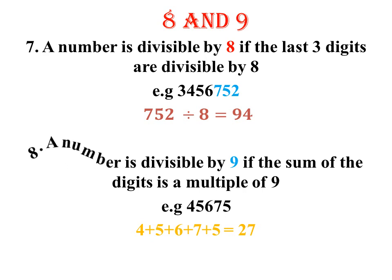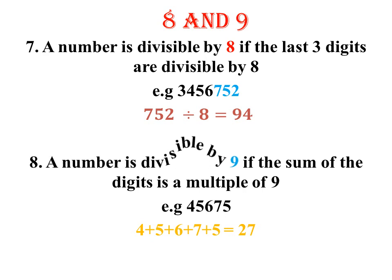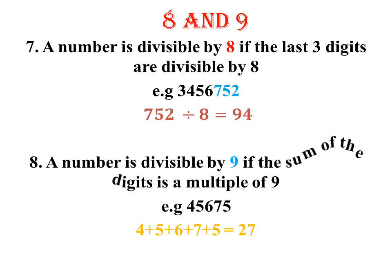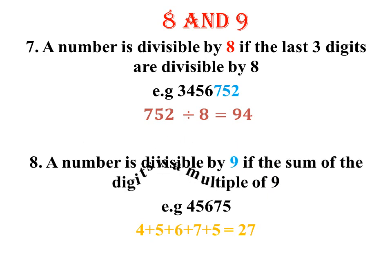The next one is 9. A number is divisible by 9 if the sum of the digits is a multiple of 9. That is to say, if you add the digits, you get a number that is divisible by 9. Like in our example, if you add 4 plus 5 plus 5 plus 6 plus 7 plus 5, you get 27. And 27 is a multiple of 9.